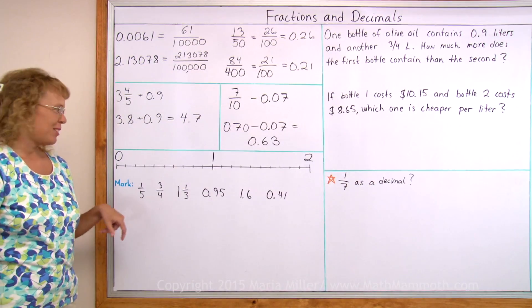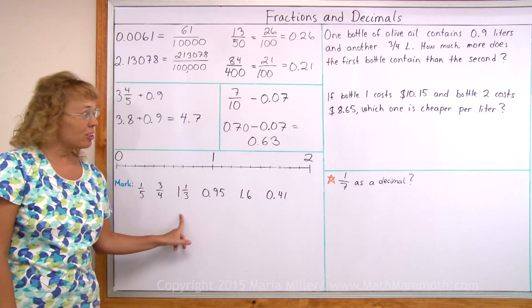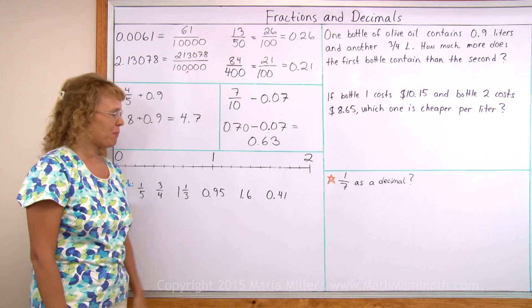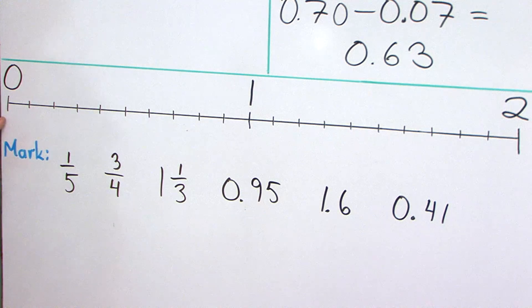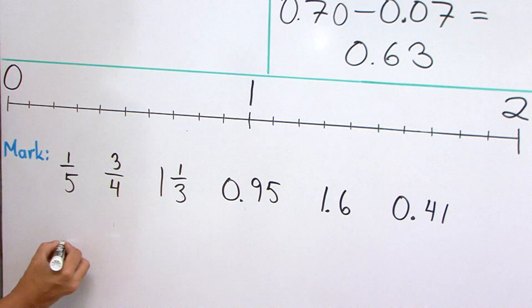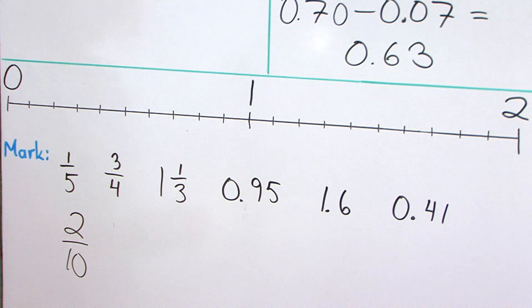Here I drew a number line. And our task is to mark on it all these different numbers, some fractions, some decimals. One-fifth. Now this number line from zero to one is divided into ten parts, not five parts. So it would definitely help to find an equivalent fraction, which we can find with so many tenths. Two-tenths is the same as one-fifth. So we go two steps. Here's my one-fifth.